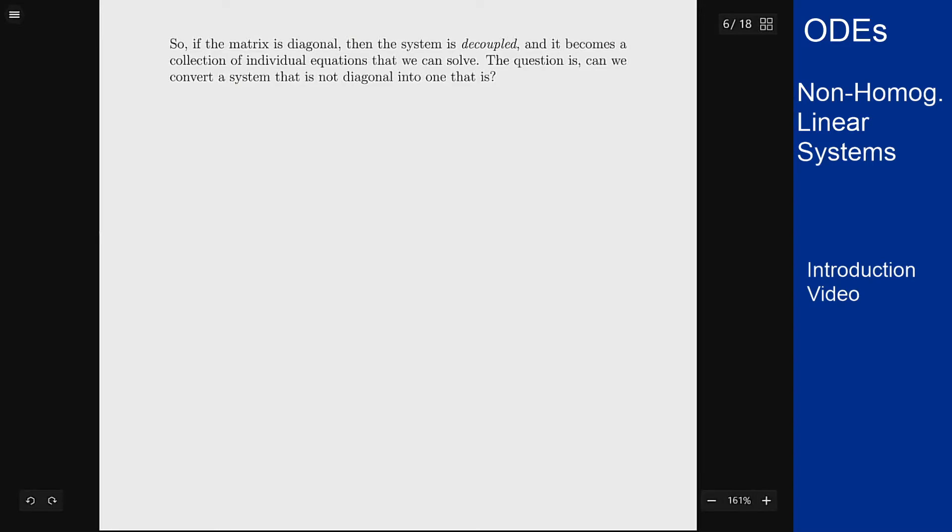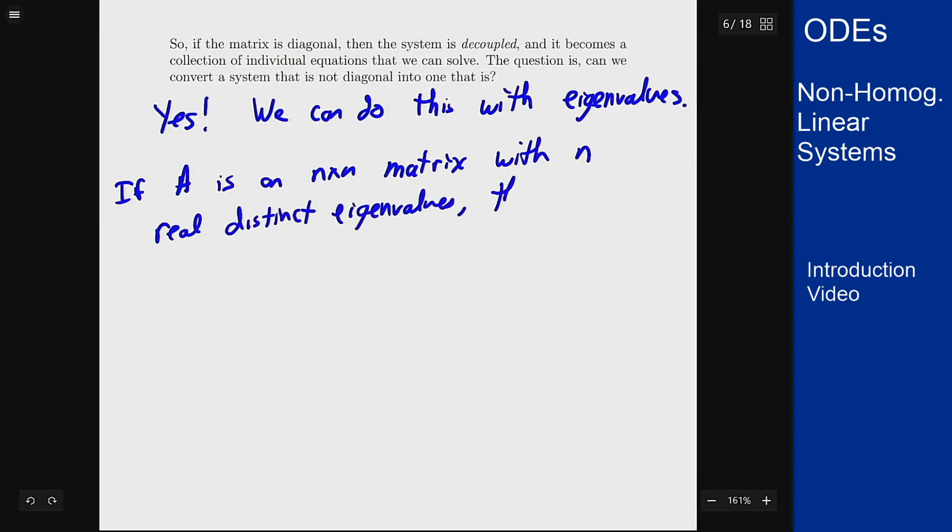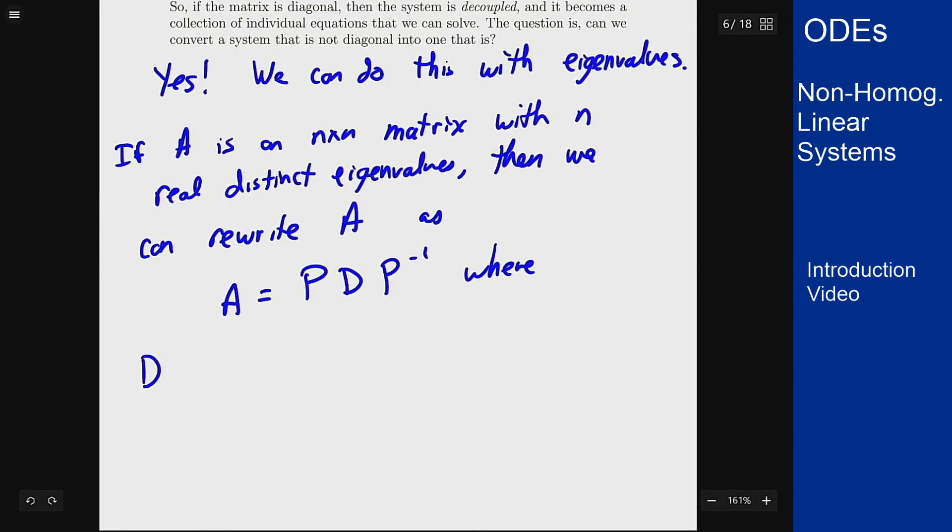It turns out that we can and we can do it using eigenvalues. The main result is the following: if A is an n by n matrix with n real distinct eigenvalues, then we can rewrite A as A = PDP⁻¹ where D is a diagonal matrix containing the eigenvalues of A.